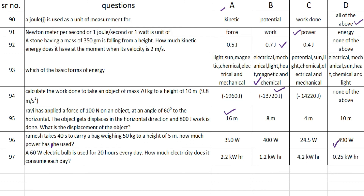The next one: a 60-watt electric bulb is used for 20 hours every day. How much electricity does it consume each day? The answer is option B — 1.2 kilowatt-hours.